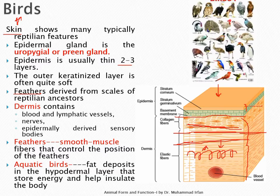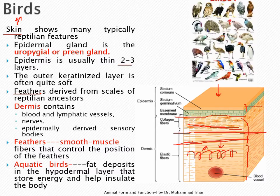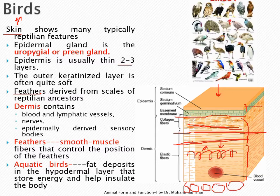Reptiles, birds, and mammals all have skin-derived characteristics originating from their epidermis. In birds, this includes feathers, which are derived from the epidermis through cornification or keratinization. The dermis contains blood vessels, lymphatic vessels, and sensory nerves. Feathers are associated with smooth muscles that control their position. Aquatic birds have an additional layer beneath the dermis called the hypodermis, which stores energy as fats and insulates the body to prevent heat loss.